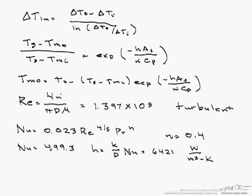So finally we can put it into our equation that we have before, where Tmo equals the surface temperature, which is 110, minus (110 minus 30), exponential of minus 6421 times the surface area, which is pi dL or 1.885 meters,